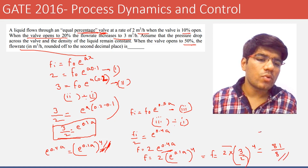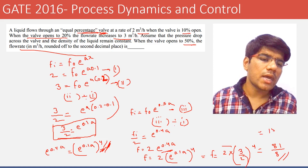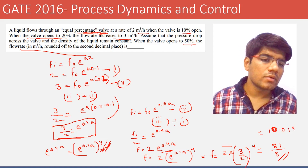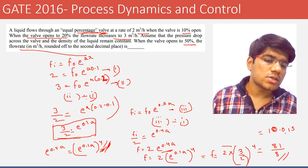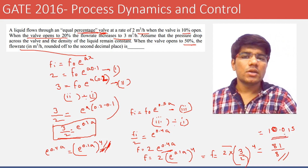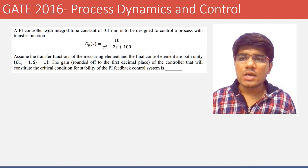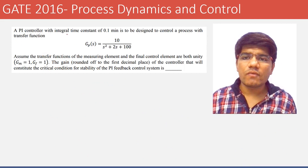The answer 81/8 equals approximately 10.125, so the right answer for this question is 10. The next question involves a PI controller with an integral time constant of 0.1 minutes designed to control a process with a given transfer function.